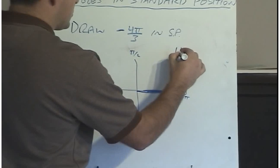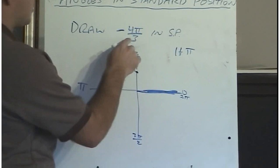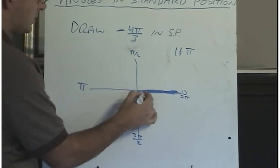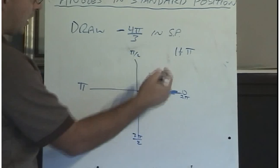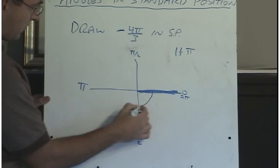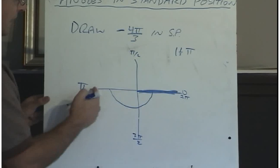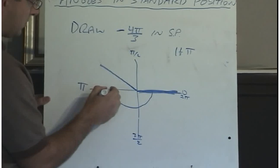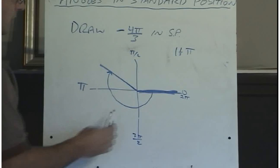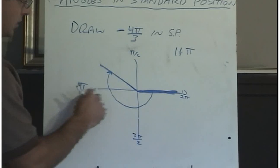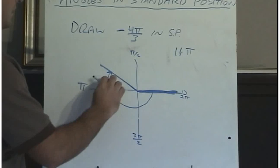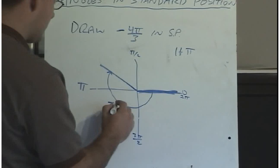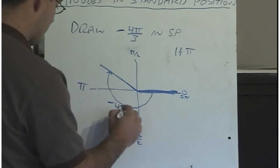4 pi over 3 is the same as 1 and 1/3 pi, because 3 goes into 4 one time with 1/3 left. So to figure out which quadrant I'm in: there's 1 pi from here to here — 180 degrees is pi — and then I need to go 1/3 of the next pi, which would be about 1/3 of the way there. So here's my angle, negative 4 pi over 3, ending up in quadrant 3.